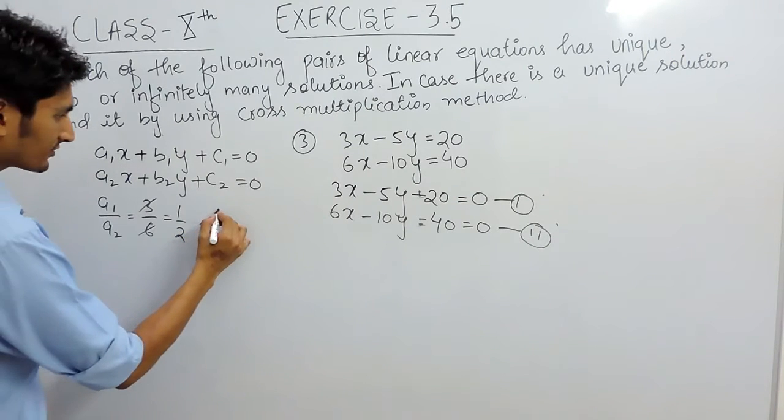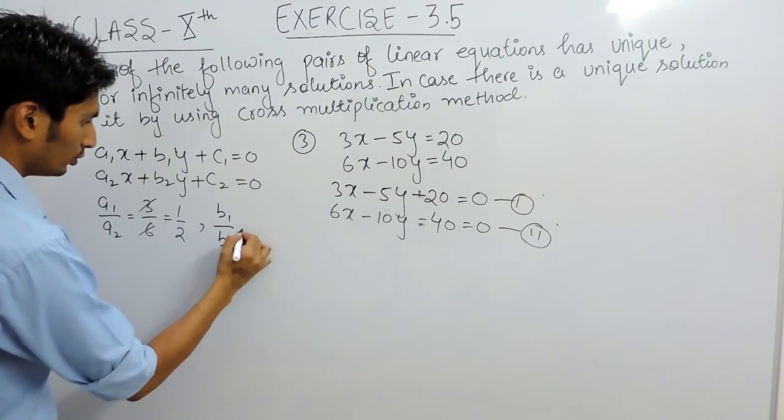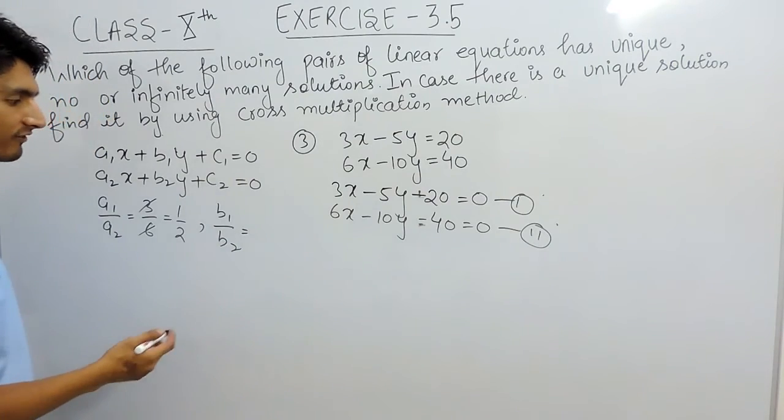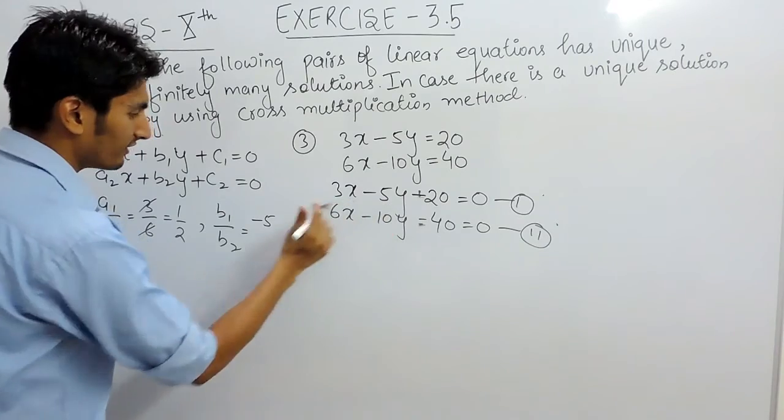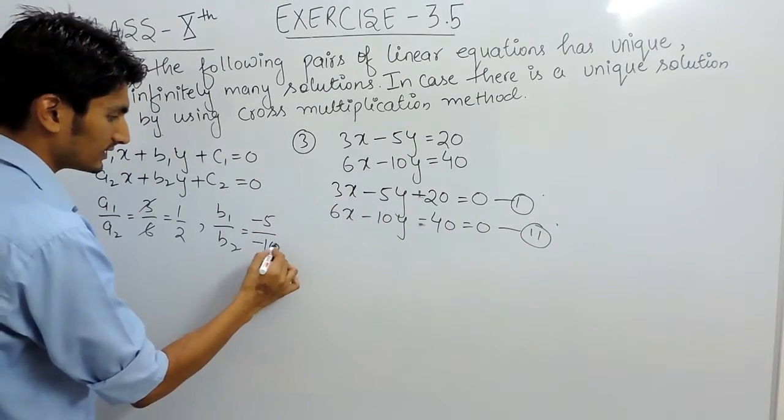After that, let's find the ratio between b1 and b2, which are the coefficients of y. So the value of b1 is minus 5 and the value of b2 is minus 10. So again, the ratio is 1 by 2.